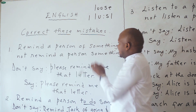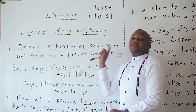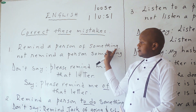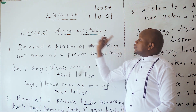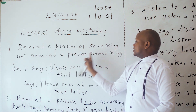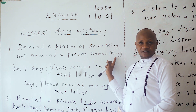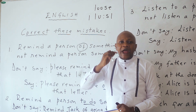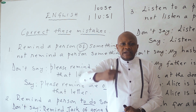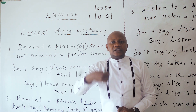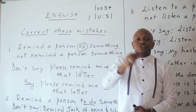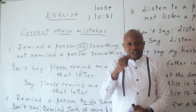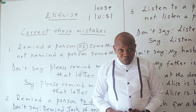Remind a person of something. We say 'remind a person of something.' We don't say 'remind a person something.' Don't forget this 'of.' When you are going to remind someone of something, you must include that preposition.